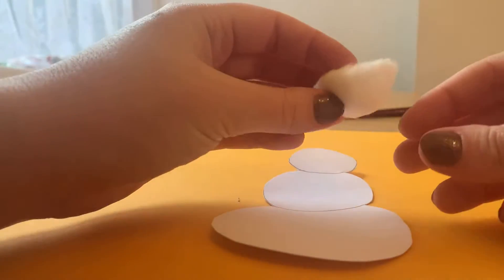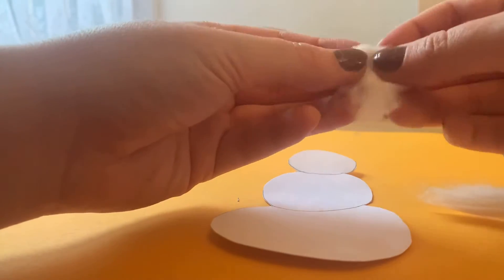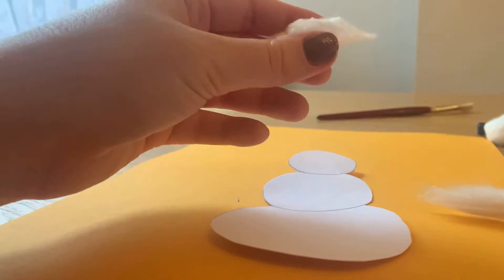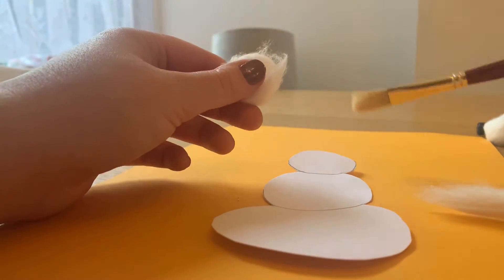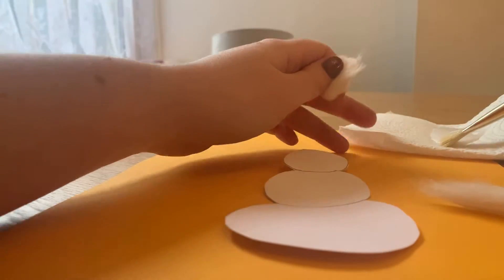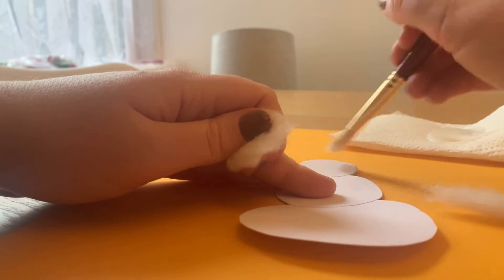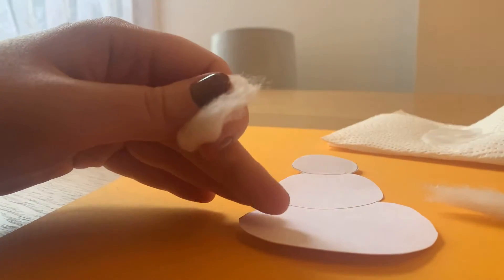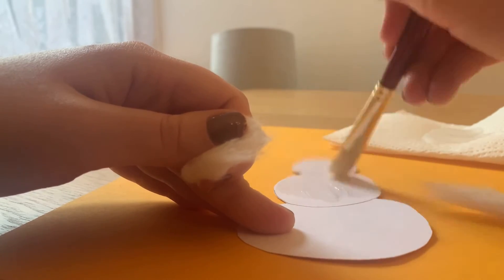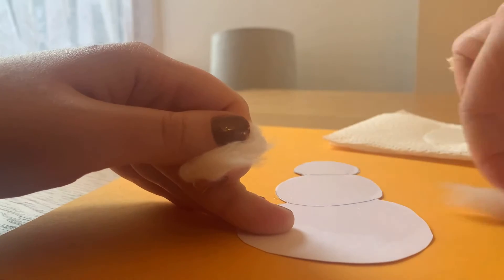Now for the fun bit. You're going to take your cotton wool balls and tear them apart so you get that nice fluffy bit of the cotton. Then you're going to get your paintbrush and your PVA glue and spread that PVA glue all over the body, the head and the body for your snow person. Once you've done that, you're going to start sticking the wool slowly onto the entire thing.